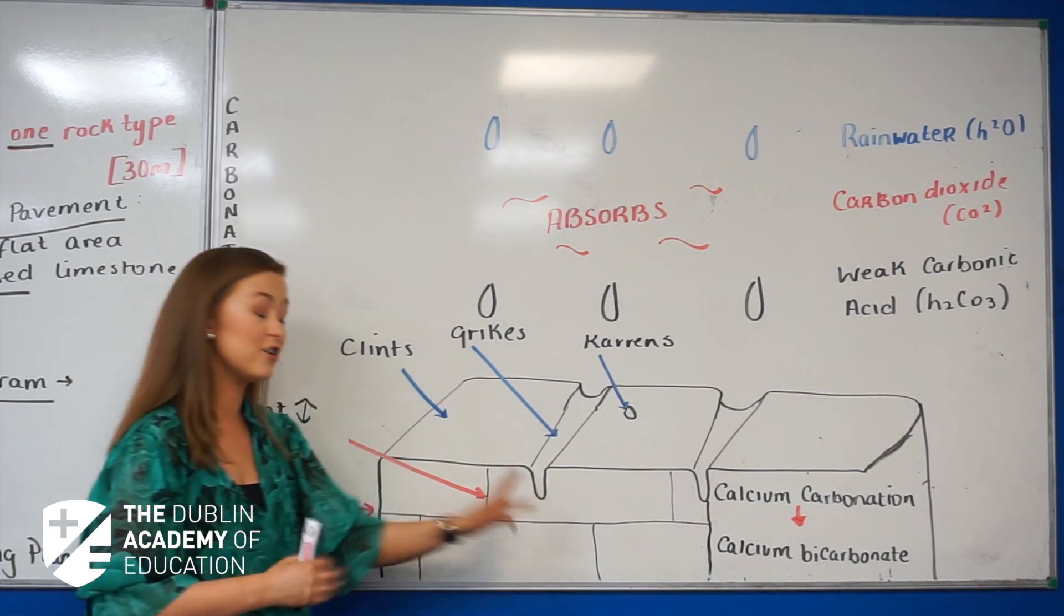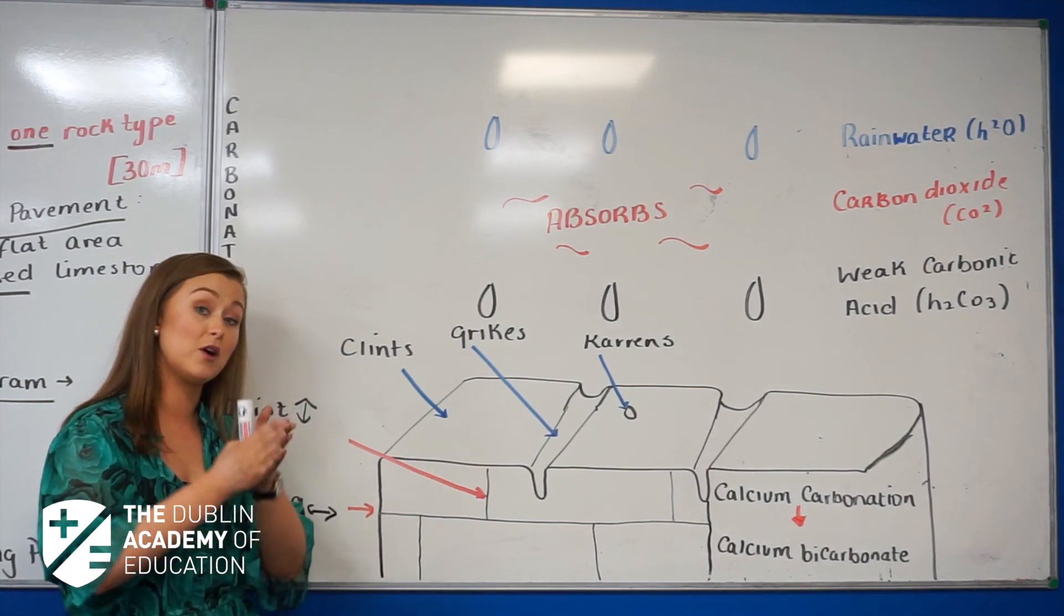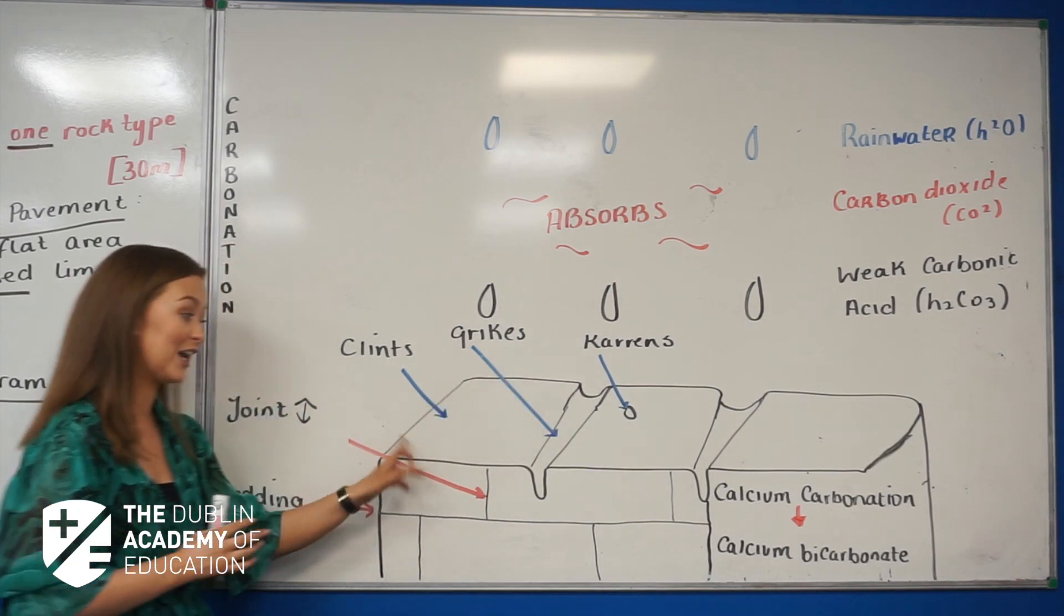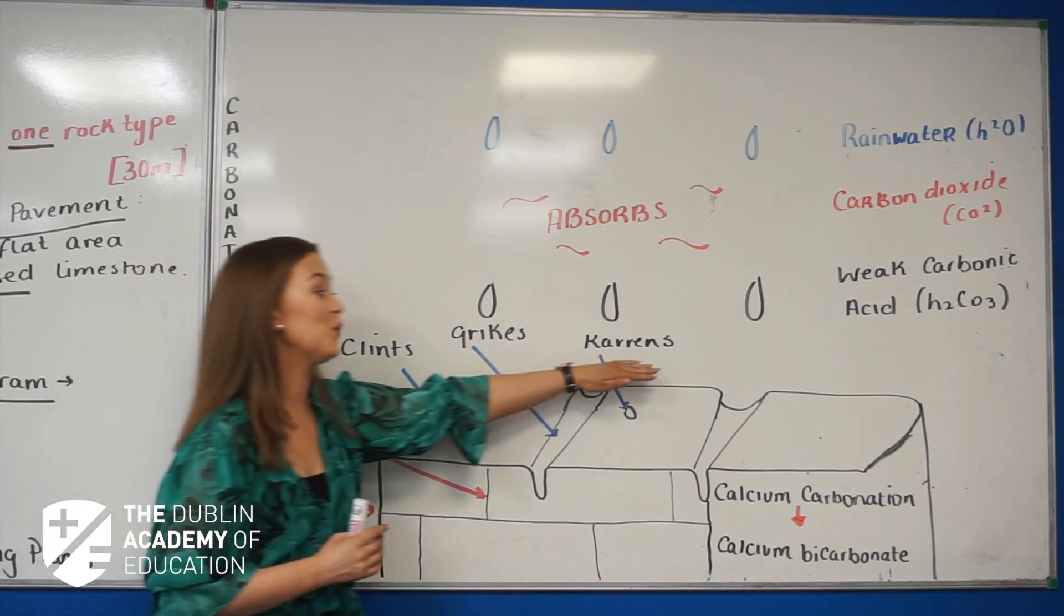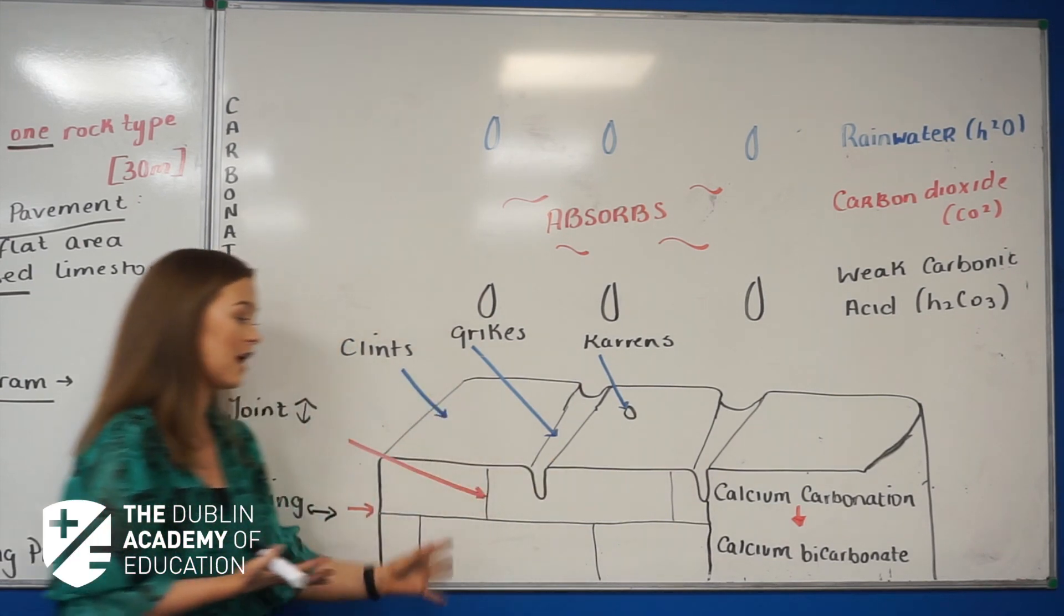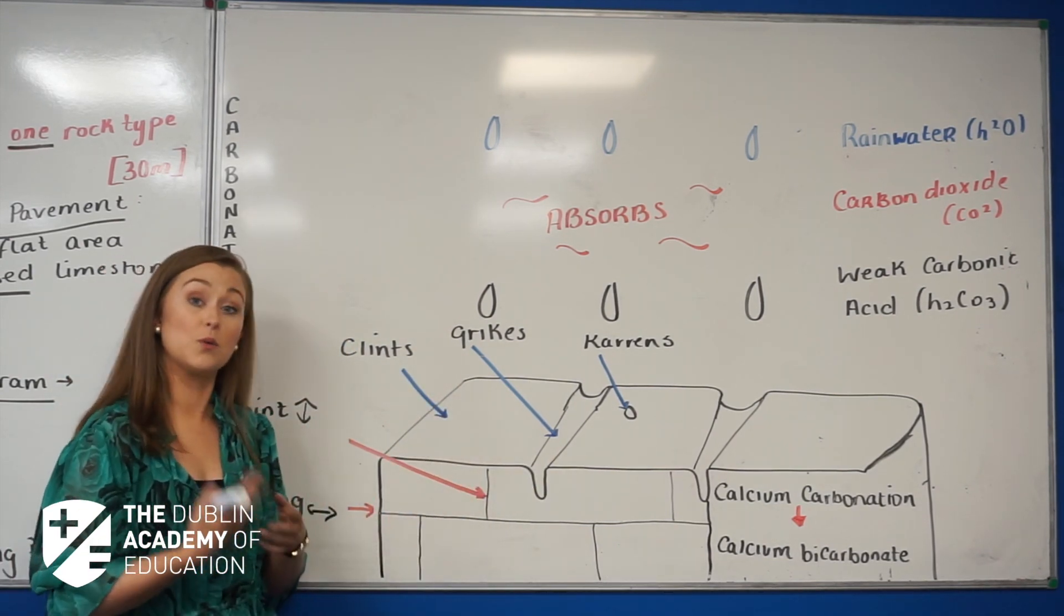You have your grikes, which are here. Your grikes are your vertical joints when they become deeper and wider. You have clints, which are your rectangular blocks, and then finally you have your karren, which are your little hollows that you'll find on top of the clints. Now all these together are what we call a limestone pavement.